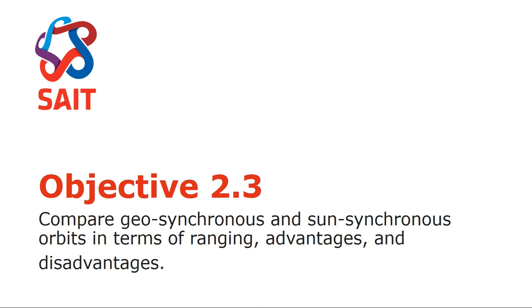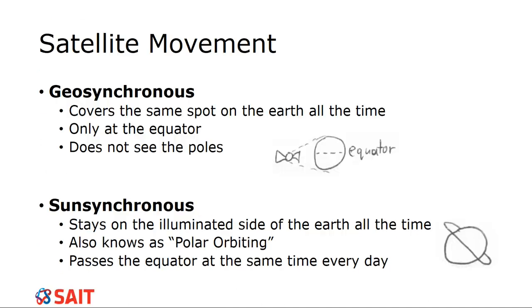So then we have objective 2.3 going into what is geosynchronous versus sun-synchronous. So these two concepts, geosynchronous is the satellite staying at a single place on the ground. So the orbital track stays with the Earth all the time. So it doesn't actually change its location. So it'll see like all of North America. And that's all it ever sees. It never gets to see anything new. It's always going to be North America.